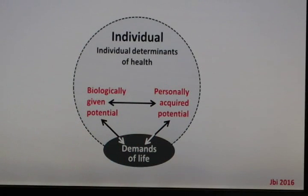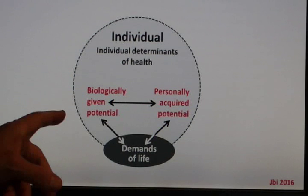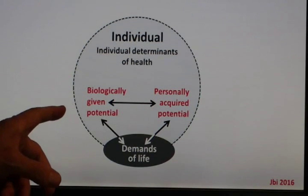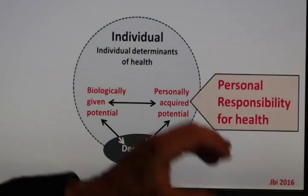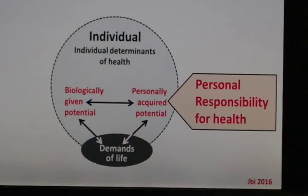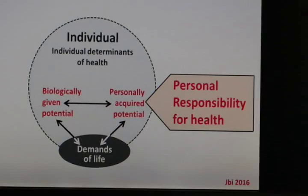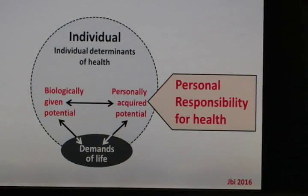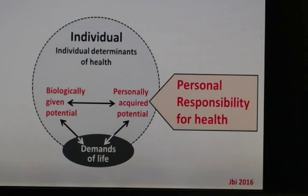The situation has become already more complicated. There are now three arrows for complex interactions occurring here. The personally acquired potential is the place where you have to assume personal responsibility for health — everybody is responsible for his health.